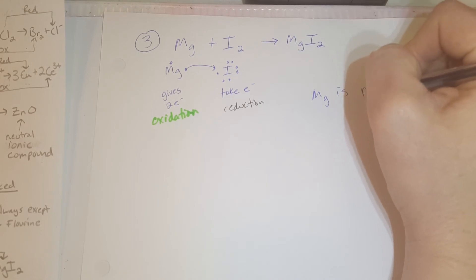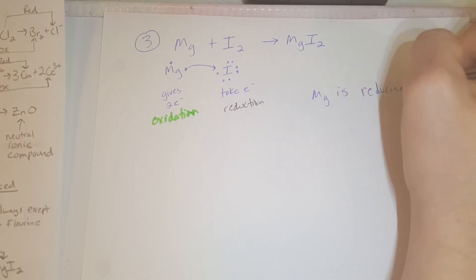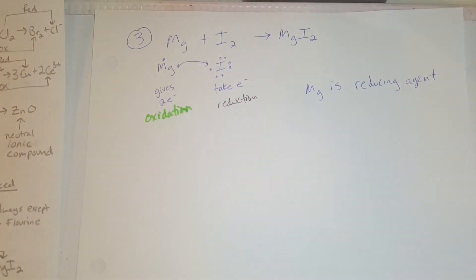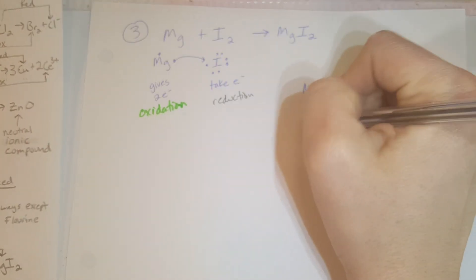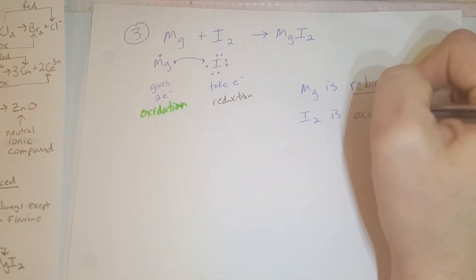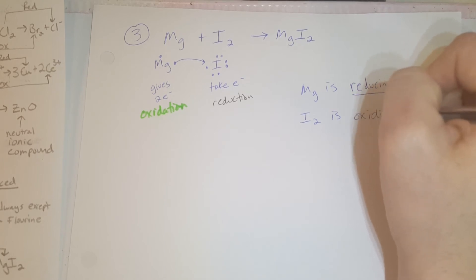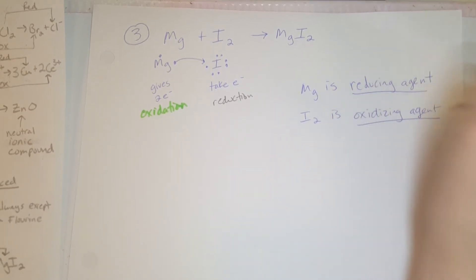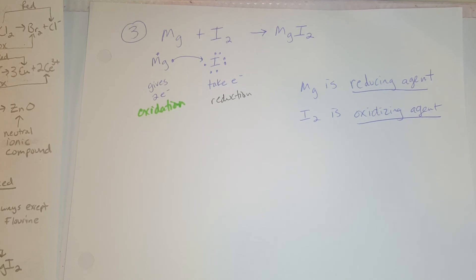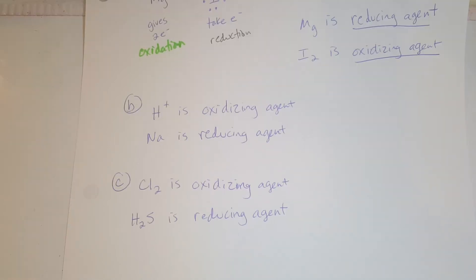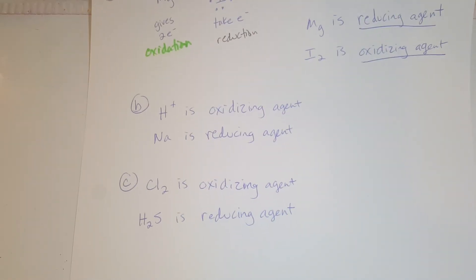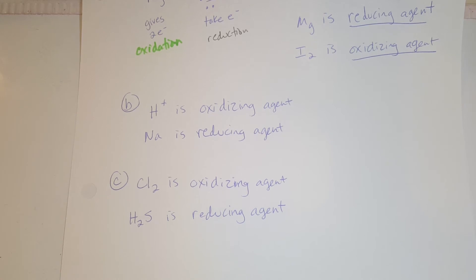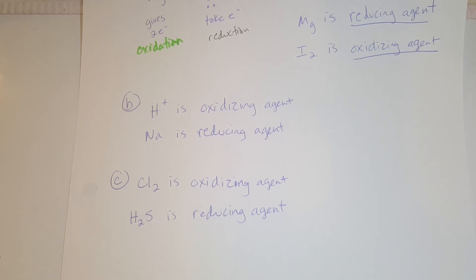So you would write the answer as: Mg is the reducing agent and iodine is the oxidizing agent. Go ahead and pause the video to try parts B and C. Here are the answers to parts B and C — check yours, and if you have questions you can ask during a one-on-one session.